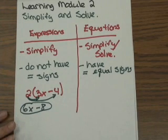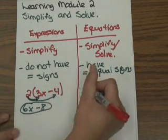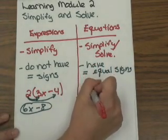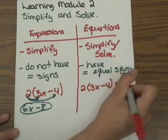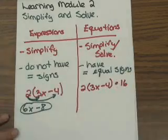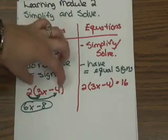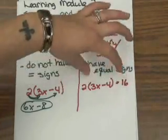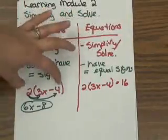Expressions are within equations — the only thing is equations have an equal sign. An equation would look something similar, except you'd have a number on the other side, or a letter, or another expression. Notice the difference: no equal sign versus an equal sign. The first step of solving this equation is very similar to simplifying — you have to simplify first.